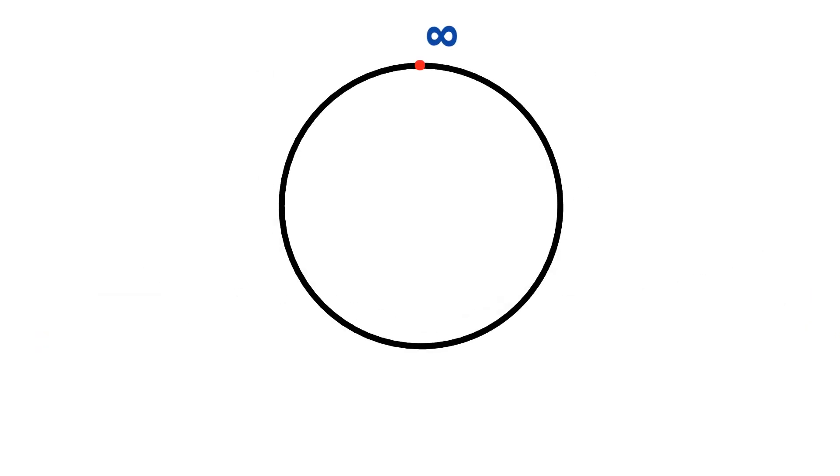Take for example the real number line. Here we can represent all of the numbers we are familiar with. Now let's make a small change by adding a point which will represent using the infinity symbol. This point will exist above all of the real numbers and also below all of the real numbers. A good way to visualize where this new point is located is to bend our real number line so that it now connects in a circle at this new point.